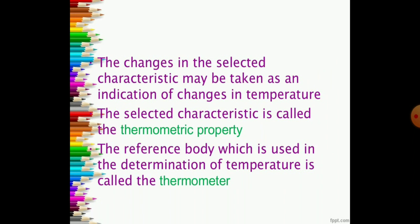The change in the selected characteristic may be taken as the indication of change in the temperature. The selected characteristic is called the thermometric property. When the reference body which is used in the determination of temperature, it is called thermometer.